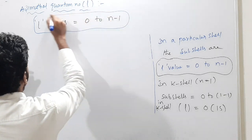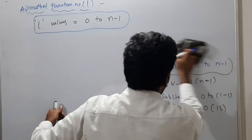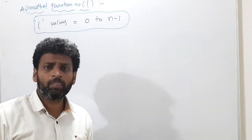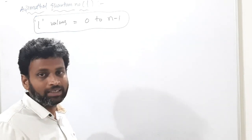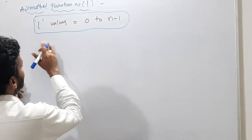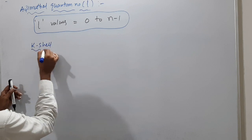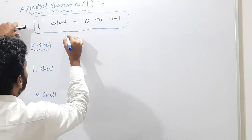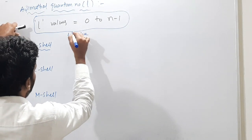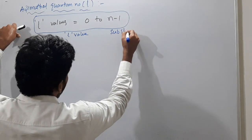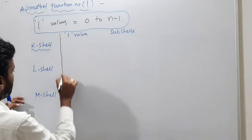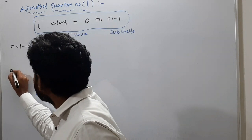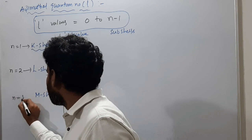Let me write this as a table. For K shell (n=1): l value = 0, subshell = 1s. For L shell (n=2): l values = 0 and 1, subshells = 2s and 2p. For M shell (n=3): l values = 0, 1, 2, subshells = 3s, 3p, 3d. The number 1, 2, or 3 in front indicates which shell the subshell belongs to.